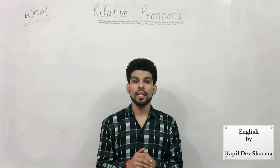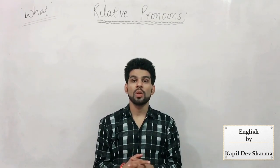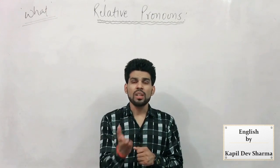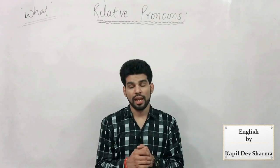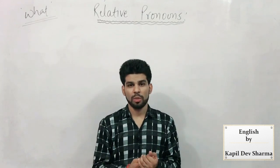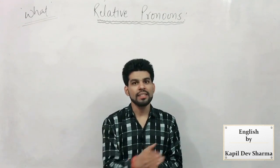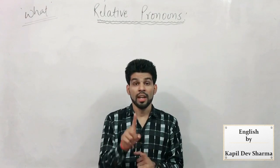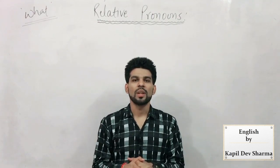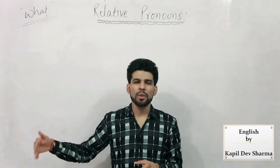Jab isse question poochha jaaye, aap isse interrogative pronoun kahiye. For example: 'What's your name?' — yahaan aapse poochha hai. 'What happened?' — kya hua, aapse poochha hai — interrogative pronoun. 'What's bothering you?' — kya pareshan kar raha hai tumhe. 'What's the matter?' — kya baat hai — ye sab interrogative examples hain. Aur jab inko relate karne ke kaam mein liya jaayega, we call them relative pronoun. So 'what' English mein interrogative bhi hai, relative bhi hai, exclamatory bhi hota hai.